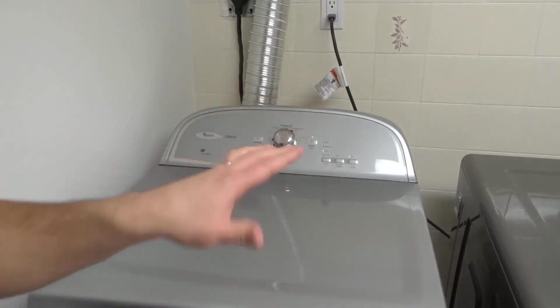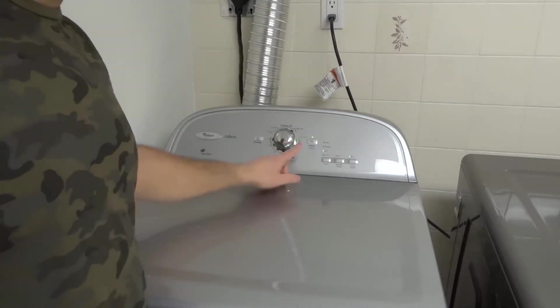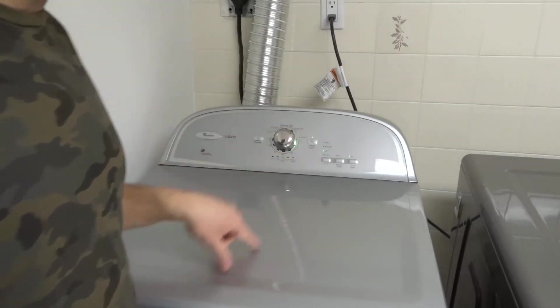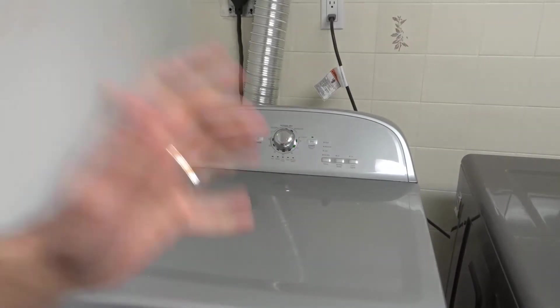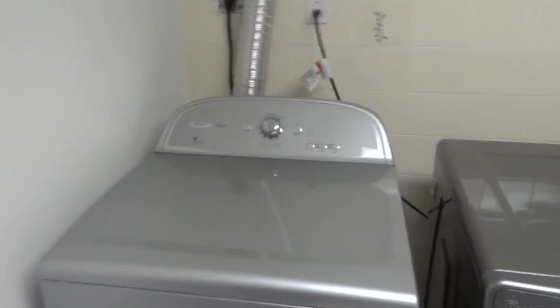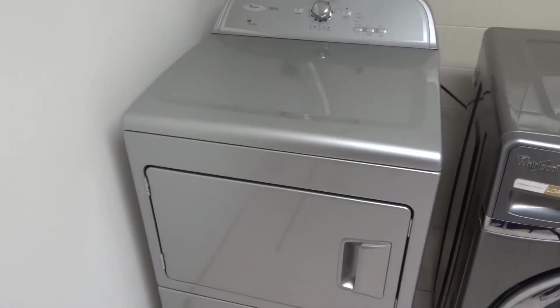And if you want, it'll automatically stop when it's done. But let's say you want to stop it early. Well, then you can pause it like that, let it stop moving, and then you can turn it off. And I've now stopped the cycle early, and I've turned the machine off. And then you can take out your clothes and hang them up or fold them up, do whatever you want to do.